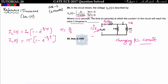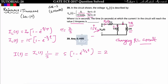So i_L(t) equals 15 into (1 minus e to the power minus 3/2 into t). This current divides into two parts: one into the 1-henry inductor and one into the 2-henry inductor. By the current division rule, i(t) equals i_L(t) multiplied by 1 divided by 3, giving i(t) equals 5 into (1 minus e to the power minus 3t/2). Setting i(t) equal to 2 amperes, we get e to the power minus 3t/2 equals 0.6, so t equals 0.3405 seconds.